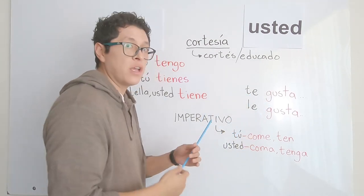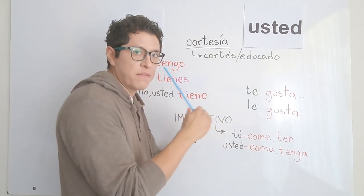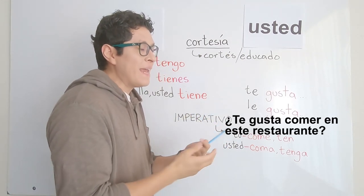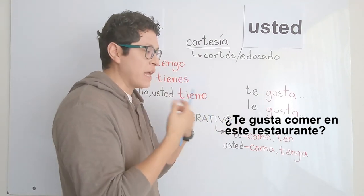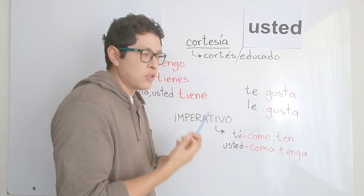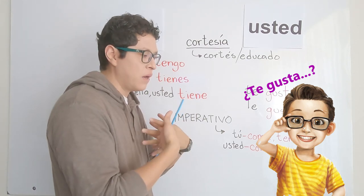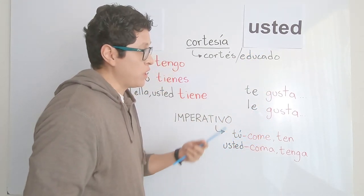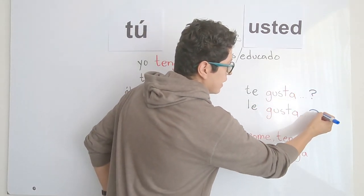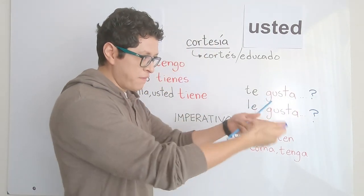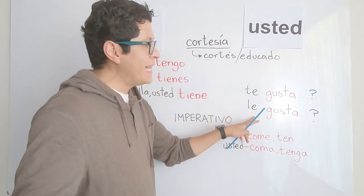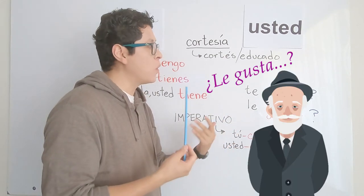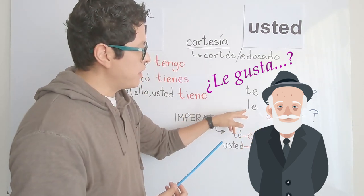For example, when talking to a friend or someone you have a level of confidence with, you say 'te gusta comer en este restaurante' — do you like to eat in this restaurant? But when speaking formally, to someone you don't know, someone new in your life, or someone older or respected, you say 'le gusta.' So te gusta is informal and le gusta is formal.